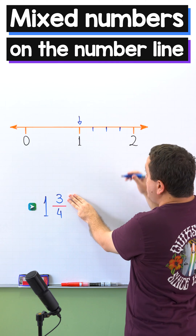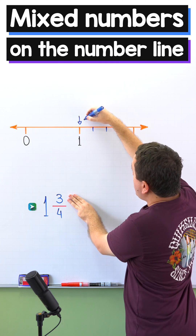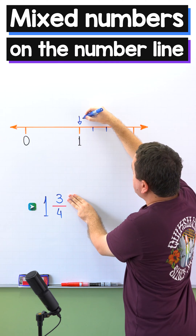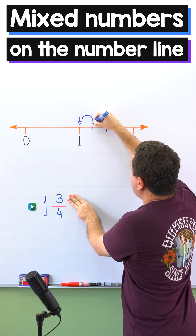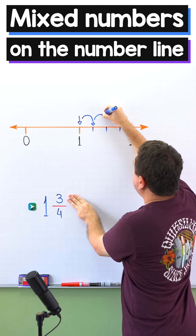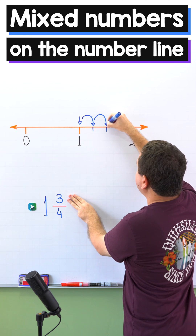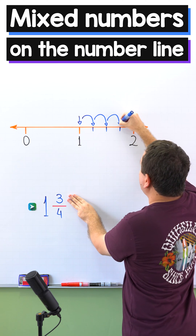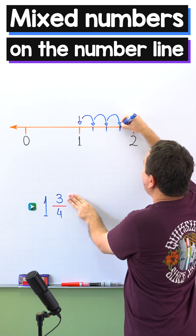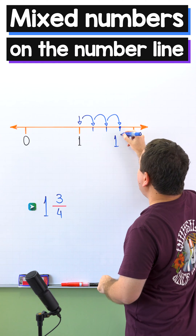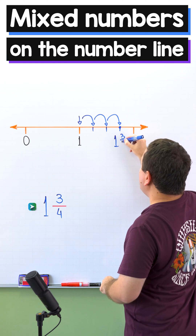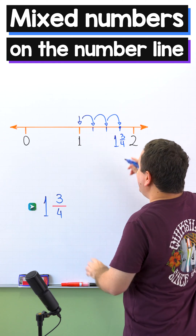Since the numerator is three, starting from one we move to the right three parts: one part, two parts, and three parts. And this is the location of the mixed number one and three-fourths.